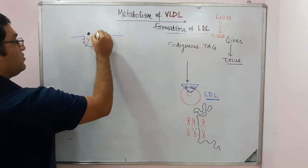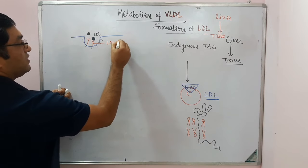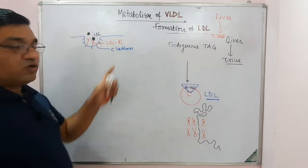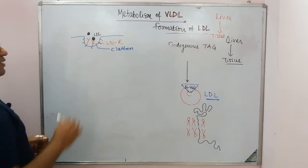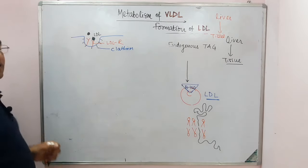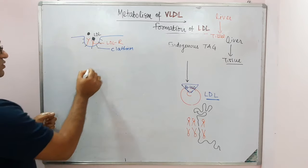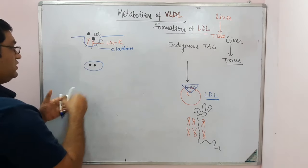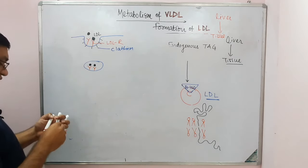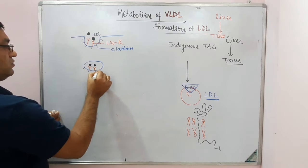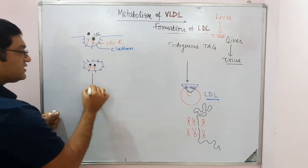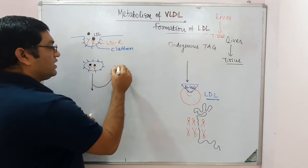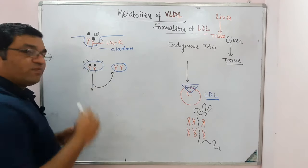With the help of clathrin, internalization of these coated pits occurs. The LDL particles are internalized together with the LDL receptors. After internalization, shedding of the clathrin occurs and the receptor part is reutilized for further LDL uptake. This is an important MCQ point — the receptor is recycled and reused.